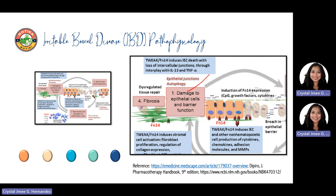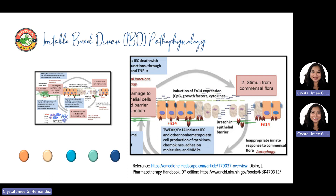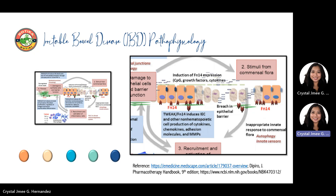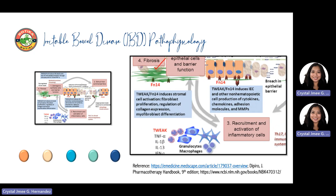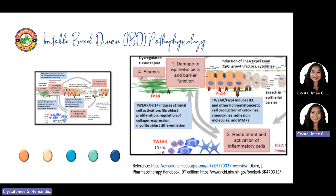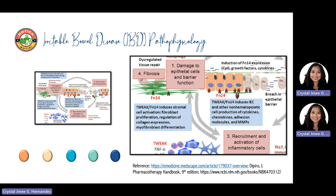This damage leads to excessive stimulation of the luminal bacteria. There is stimulation from commensal flora, which subsequently leads to the production of inflammatory mediators. There would then be recruitment and activation of inflammatory cells. This cycle — steps 1, 2, and 3 — becomes a rigorous cycle, eventually developing into fibrosis or dysregulated tissue repair, ultimately leading to IBD.